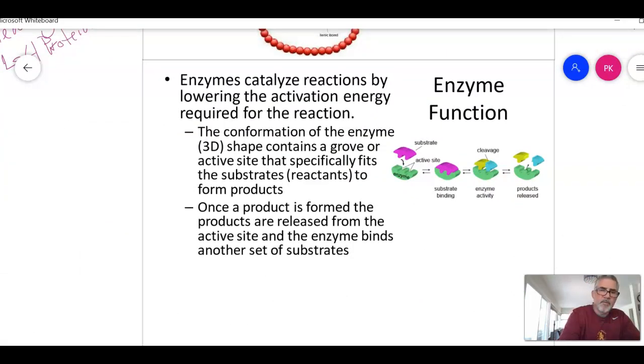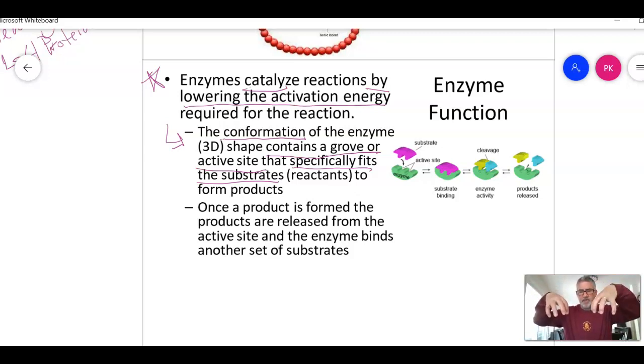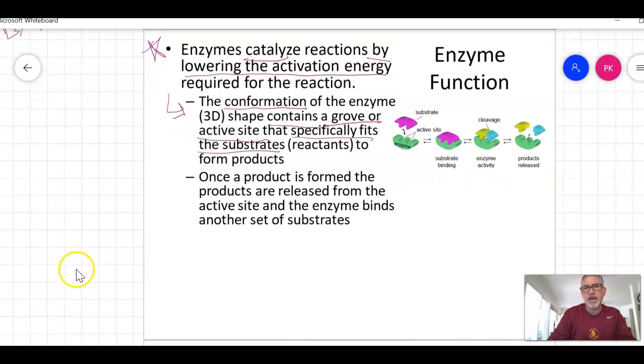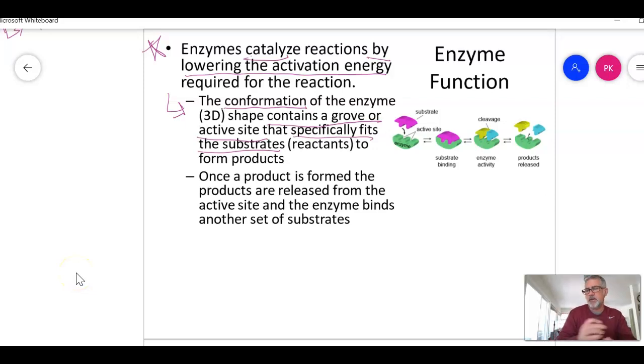So enzymes catalyze reactions by lowering activation energy. The conformation sets up what's called the active site, and that active site specifically fits a substrate. A substrate is another word for reactant. In biology, those substrates fit perfectly, and they can only fit in one direction, and then catalyze by moving them together so they can form bonds like hydrogen bonds or do dehydration synthesis. Once a product is formed, it's released, and the enzyme is free to bind again. We say that it works like a lock and key.